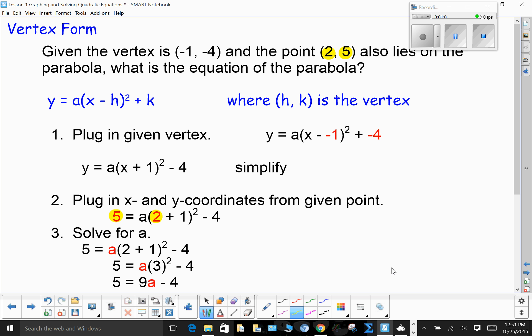Well, first, recall what the vertex form is. y = a(x - h)² + k. H and K are the vertex.